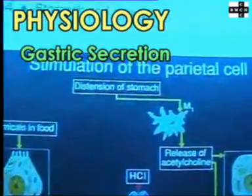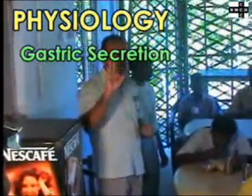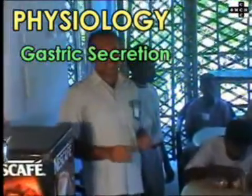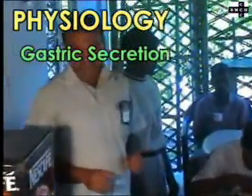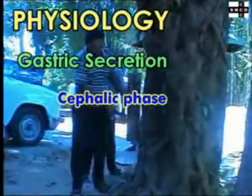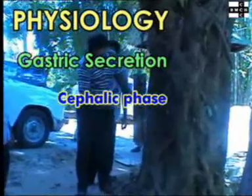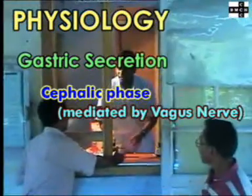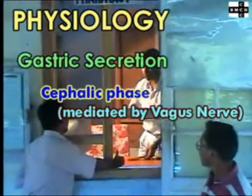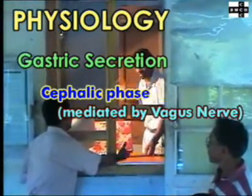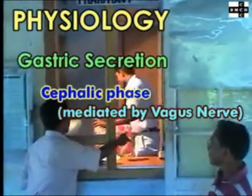Classically, three phases of gastric acid secretion occur. The cephalic phase is mediated by the vagus nerve and was first described by the Russian physiologist Pavlov.